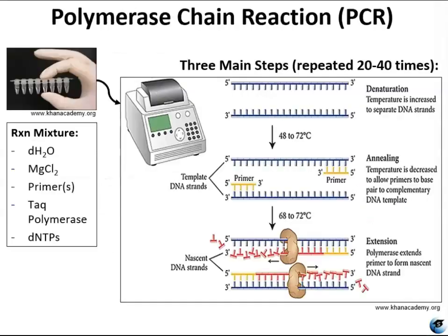PCR occurs over multiple cycles, each containing three steps: denaturing, annealing, and extension. Machines called thermocyclers are used for PCR. These machines can be programmed to cycle through these three steps multiple times, usually somewhere between 20 to 40 times, but typically closer to 30. The first step: the double-stranded template DNA containing the target sequences is denatured at approximately 94 degrees. The high temperature required to physically separate the DNA strand is the reason that the heat-stable Taq polymerase is required.